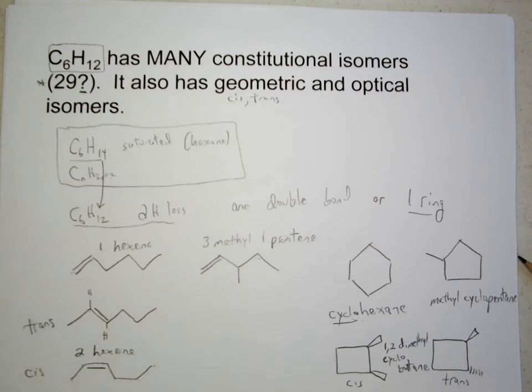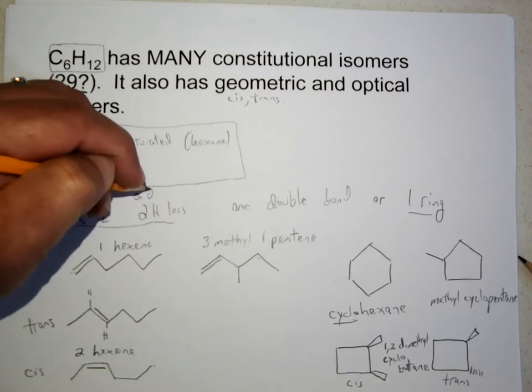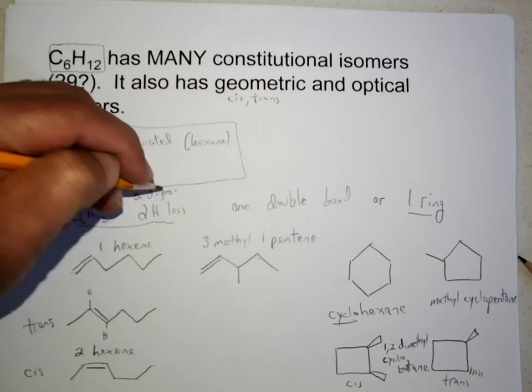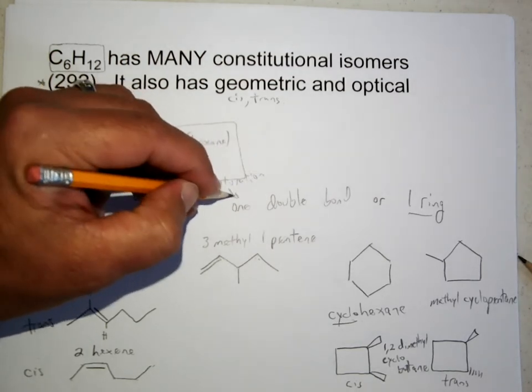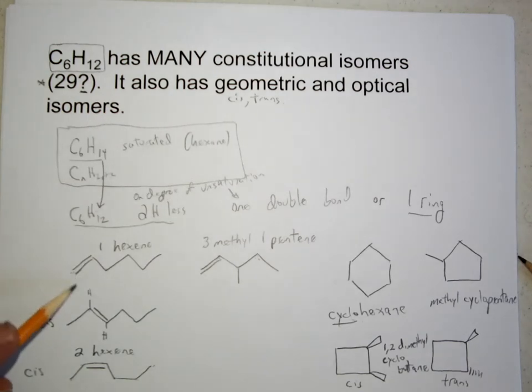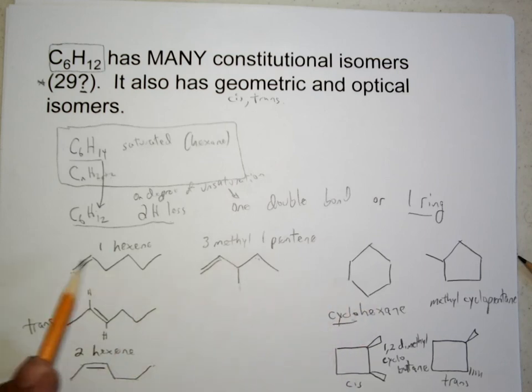But just give you a flavor in an introductory sense of if we see a formula for a compound, we want to think first in terms of what the alkane or the saturated hydrocarbon is. Then we can figure out the number of degrees of unsaturation. Two hydrogens less than saturated is one degree of unsaturation, which means either one double bond or one ring. When we put in double bond possibilities, we have a variety of chain lengths, different locations for the double bond. When we shorten the chain, we have branches and different locations for the branches.